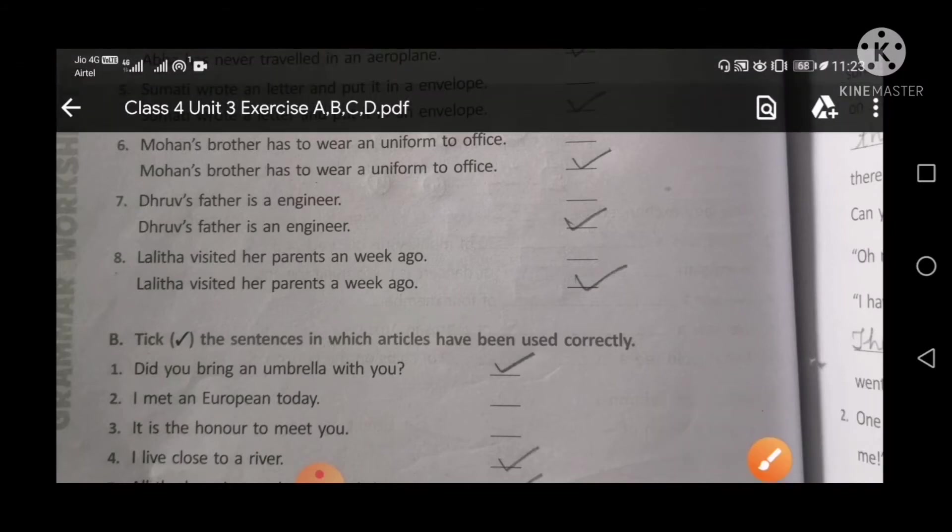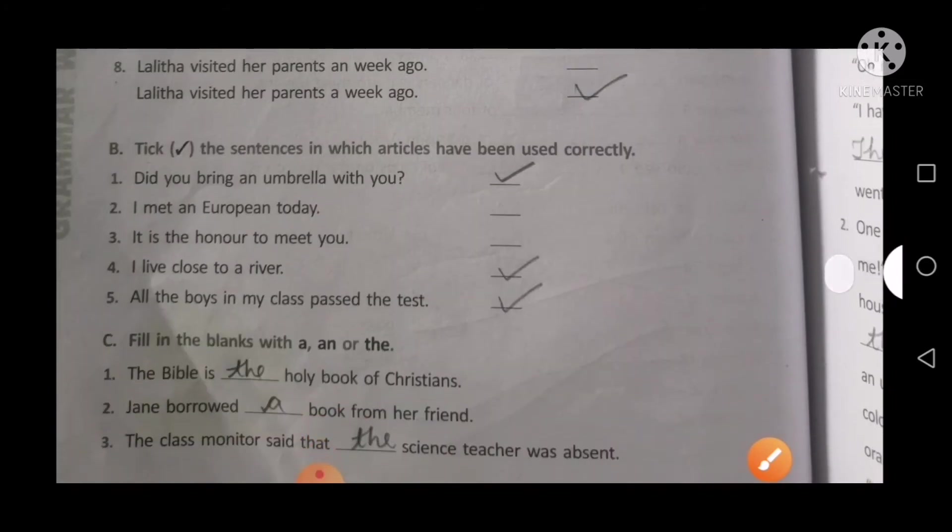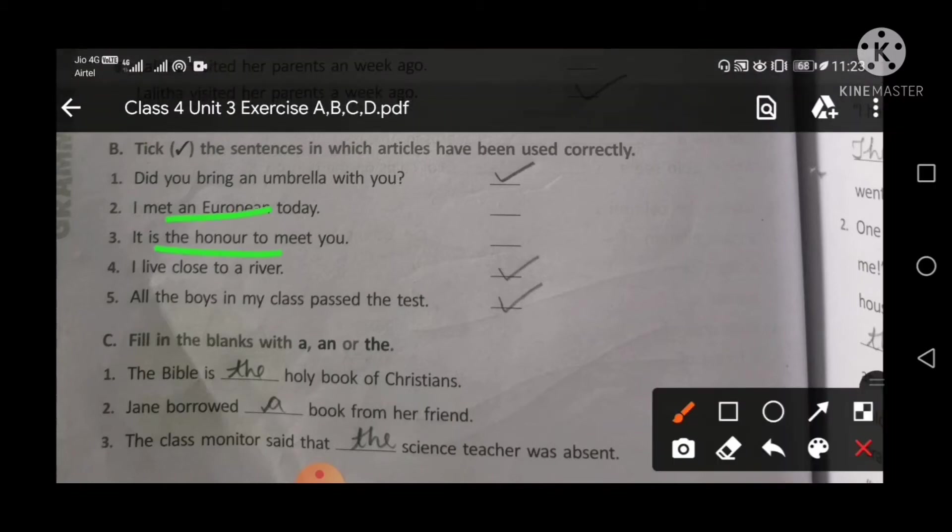Like this, your exercise is completed. Next, Exercise B: Tick the sentences in which articles have been used correctly. Did you bring an umbrella with you? I met an European today. It is the honor to meet you. I live close to a river. All the boys in my class passed the test is correct, okay.